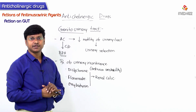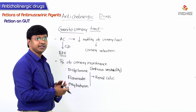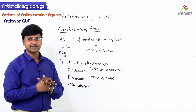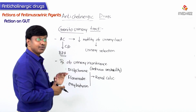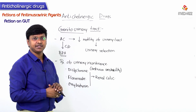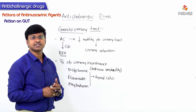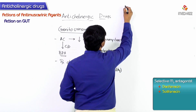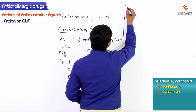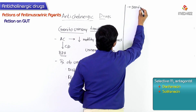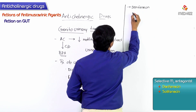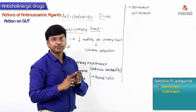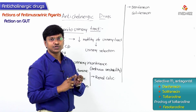Other important drugs used in the treatment of urinary incontinence are those with selective M3 antagonistic activity. These drugs are darifenacin and solifenacin. We also have two more drugs: tolterodine and fesoterodine.